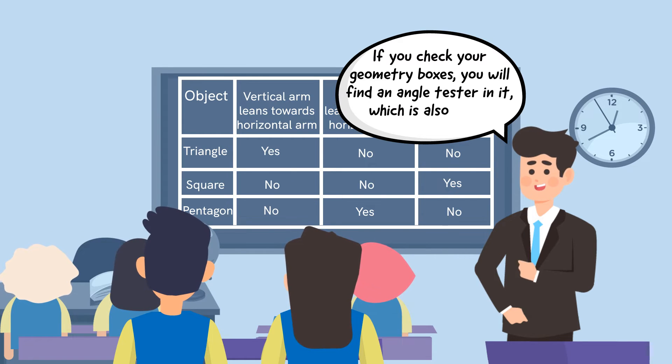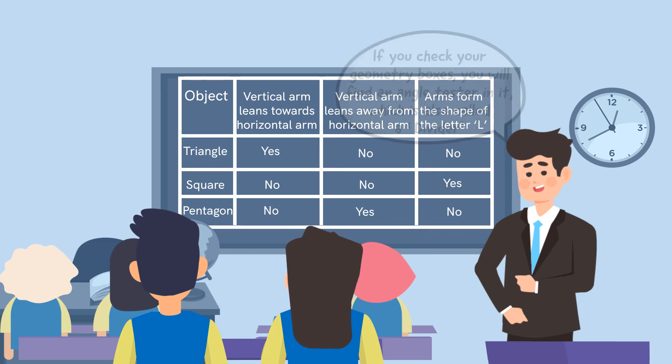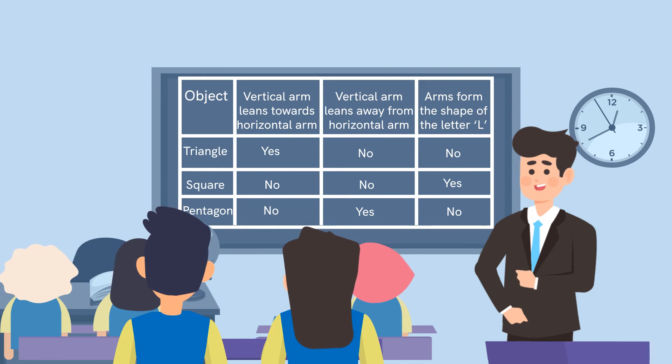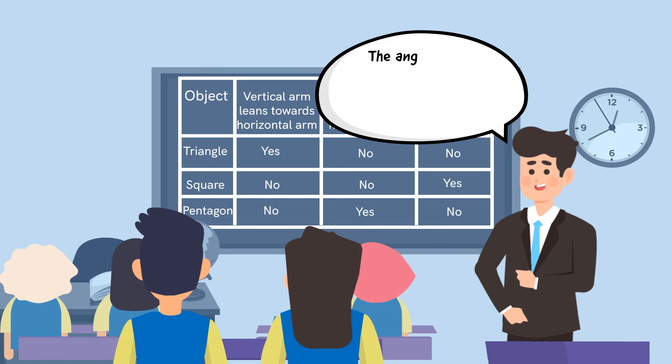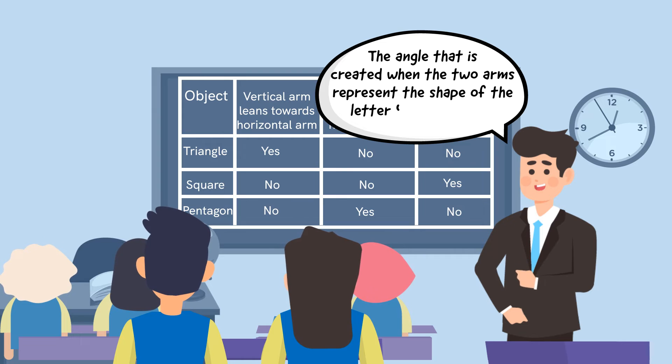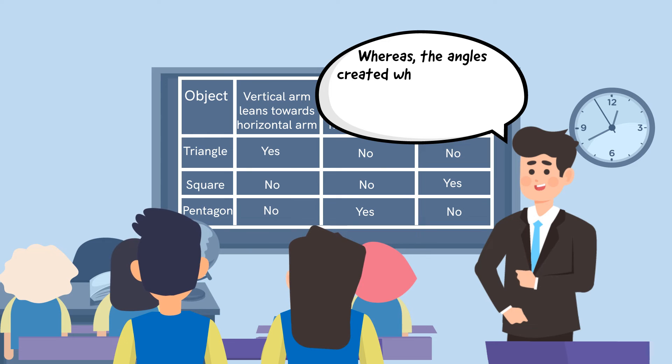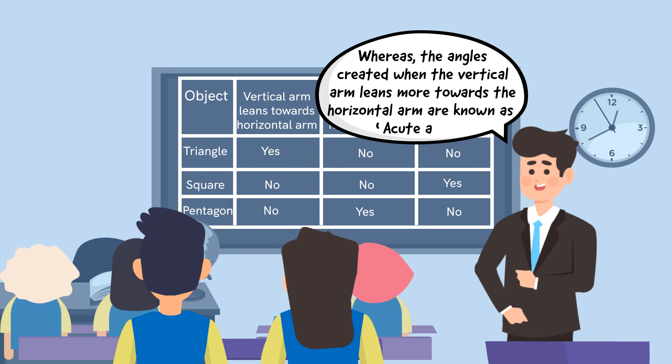We will conclude the session by informing the students that the angle that is created when the two arms represent the shape of the letter L is known as a right angle, whereas the angles created when the vertical arm leans more towards the horizontal arm are known as acute angles.